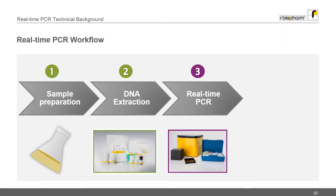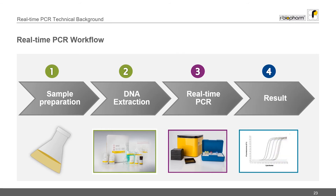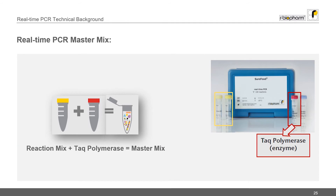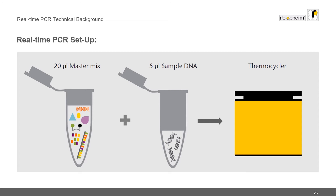Next you need to set up the PCR reactions and start the run. After approximately one hour you get the results. Using the rBiopharm PCR kits you are provided with a reaction mix. This reaction mix contains target-specific primers and probes, dNTPs (the DNA building blocks), and a buffer system containing for instance magnesium ions. The master mix consists of the reaction mix and the Taq polymerase. The manuals tell you how much of the enzyme to add to the reaction mix. This thermostable polymerase enzyme drives the PCR. Now the DNA is added to the master mix, and the tube can then be placed into the thermocycler.